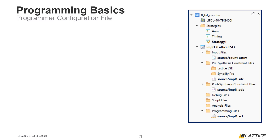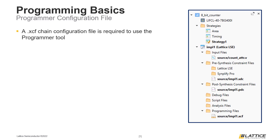The final thing we are going to discuss are the files used to configure a programming session. To use the programmer tool, a .xcf chain configuration file is required. This file contains the settings used to configure a programmer session, like the targeted devices, cable settings, and more. This .xcf file is the main difference between Radiant's standalone and built-in versions of the programmer tool. If the programmer tool is launched for the first time using Radiant, a basic chain configuration file will be generated automatically. The name of this generated chain configuration file will match the name of the active implementation.